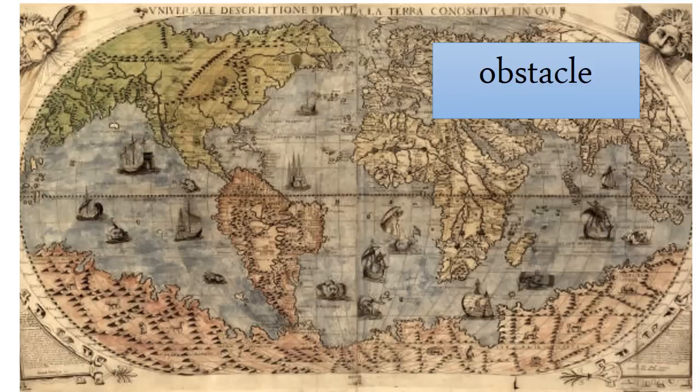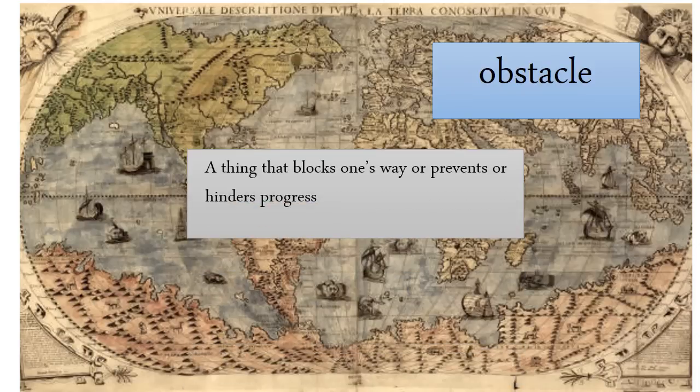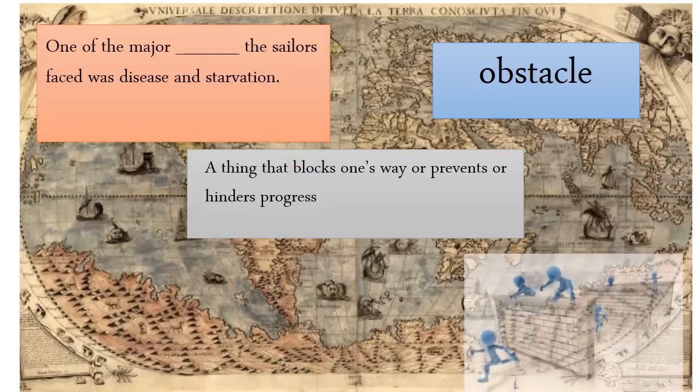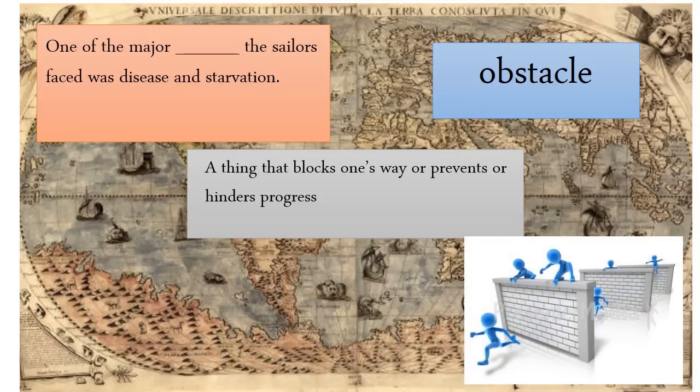The next word is obstacle. An obstacle is a thing that blocks one's way or prevents or hinders progress. Think of it as a wall and you have to get over that obstacle in order to achieve something. An example sentence could be, one of the major obstacles the sailors faced was disease and starvation.